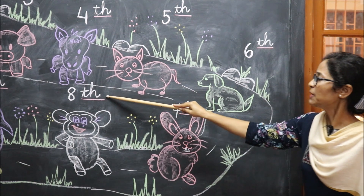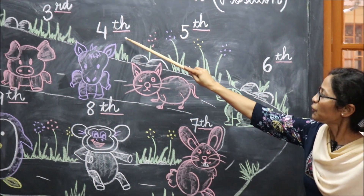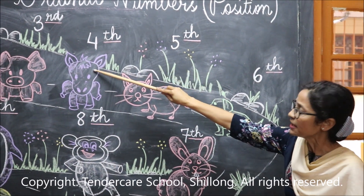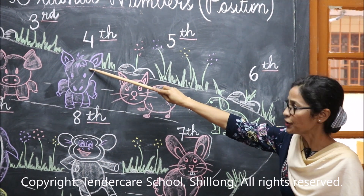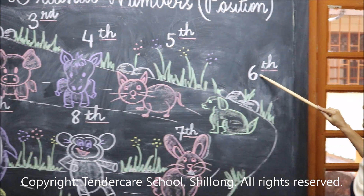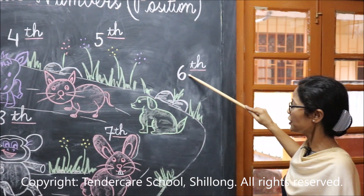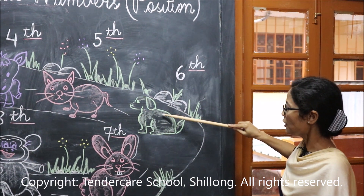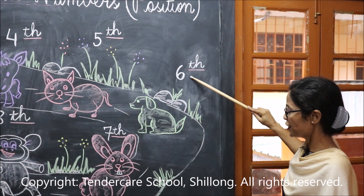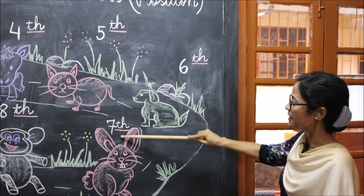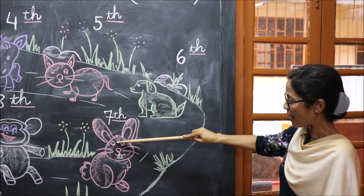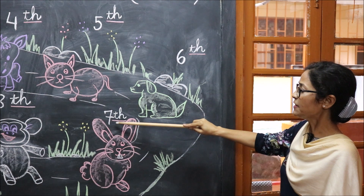Which animal is in the fourth position? The donkey is in the fourth position. Which animal is in the sixth position? The dog is in the sixth position. Which animal is in the seventh position? The rabbit is in the seventh position.